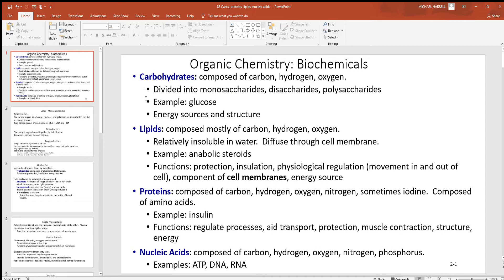Good example of carbs in the body are glucose. This is the form of carbohydrates that our cells need along with oxygen for energy production. Good energy sources also provide structure. Look at something like a DNA molecule. Simple sugars make up a big part of them.